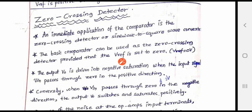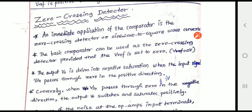The next topic is the zero crossing detector. It is an immediate application of the comparator. A zero crossing detector is also known as a sine wave to square wave converter, as it converts a sine wave into a square wave.